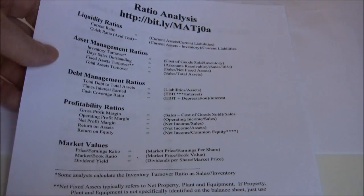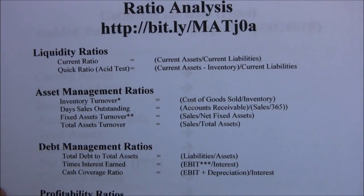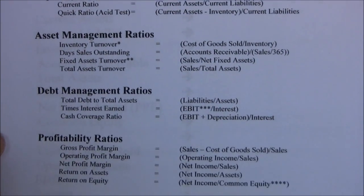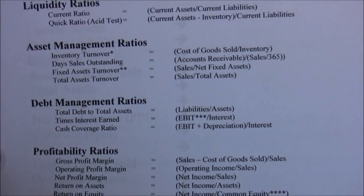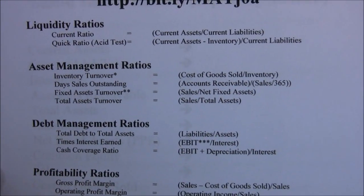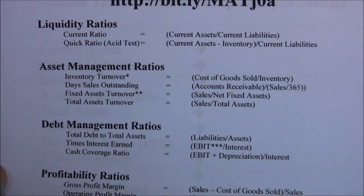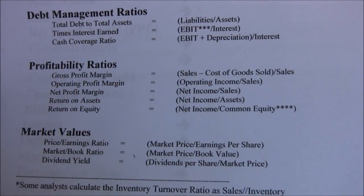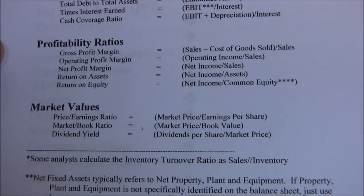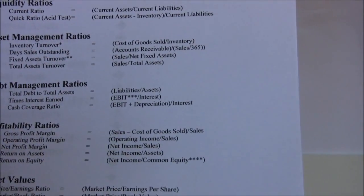The first thing we're going to do in this video is gather the data needed to calculate all these ratios. You need lots of different pieces of information — for example, in the inventory turnover ratio we need cost of goods sold divided by inventory, and when we want to calculate the return on equity we need net income divided by common equity, sometimes referred to as owner's equity. So we need to gather the data first.